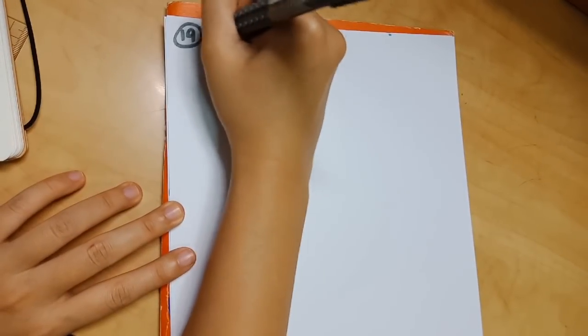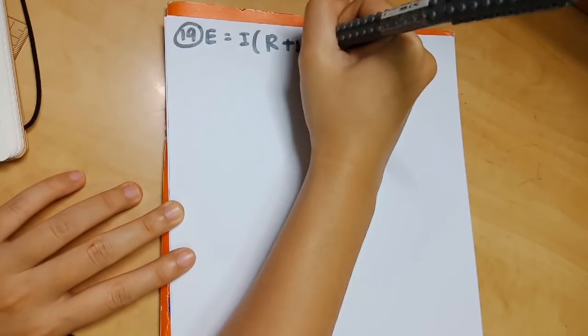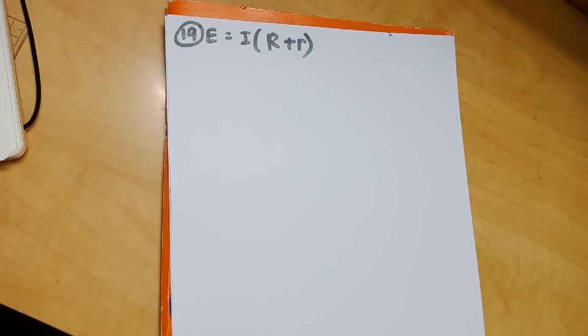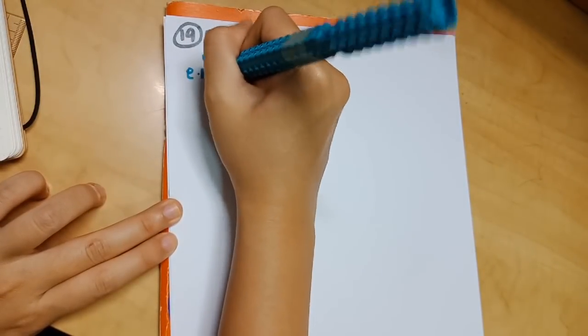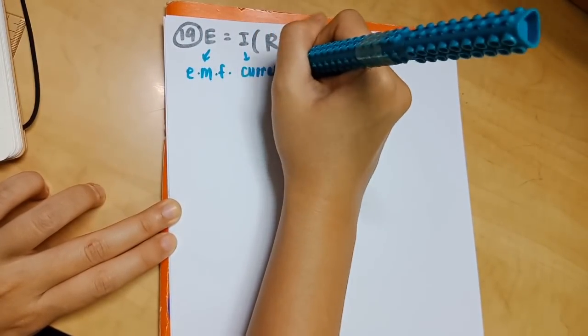Number 19: E equals I bracket R plus r. E refers to EMF, I for current, R is for resistance, and small letter r is for internal resistance.